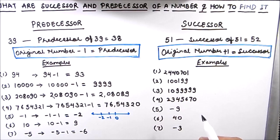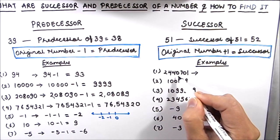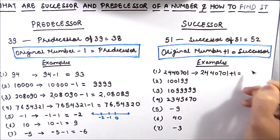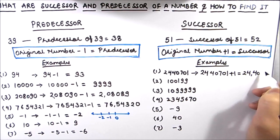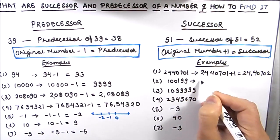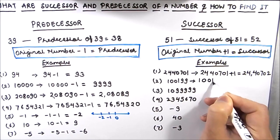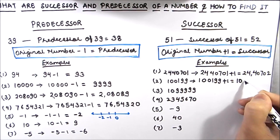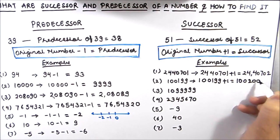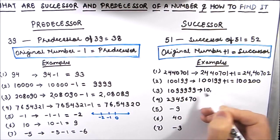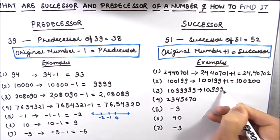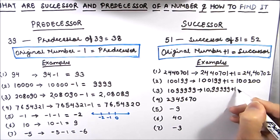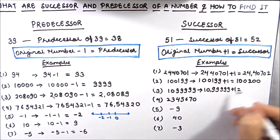Let us now find the successor of numbers. The successor of 24,40,701 is 24,40,702, since we add 1. The successor of 1,199 is 1,200. The successor of 10,99,999, when we add 1, gives us 11 lakhs.